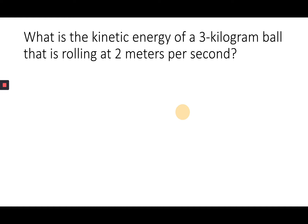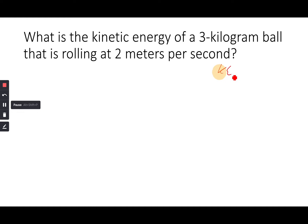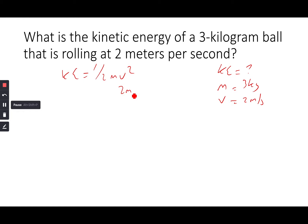What is the kinetic energy of a 3 kilogram ball rolling at 2 meters per second? Kinetic energy is unknown, mass is 3 kilograms, velocity is 2 meters per second. KE equals one-half mv squared: 2 squared is 4 meters per second, times half of 3 which is 1.5 kilograms. 1.5 times 4 equals 6 joules.